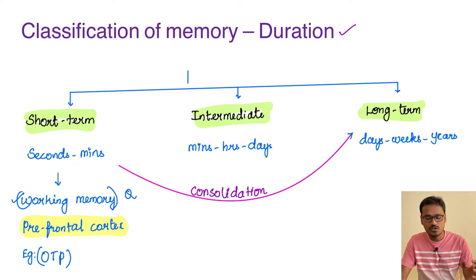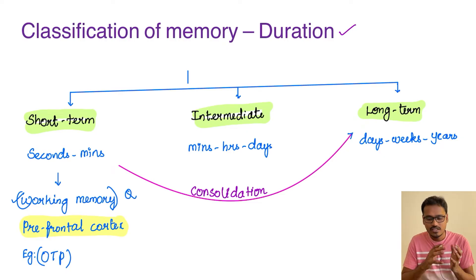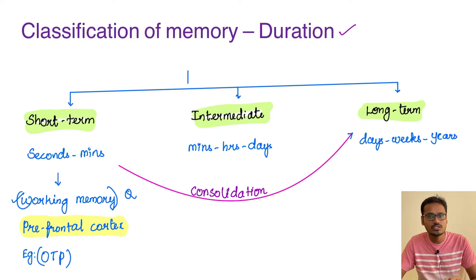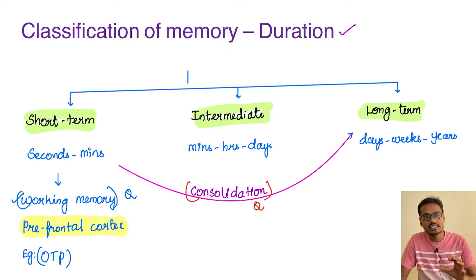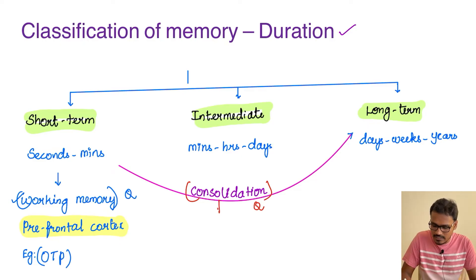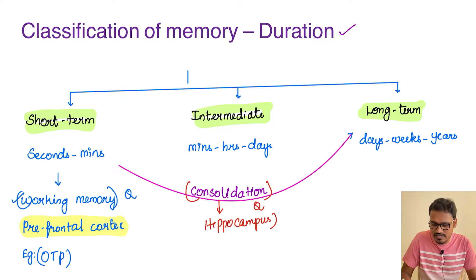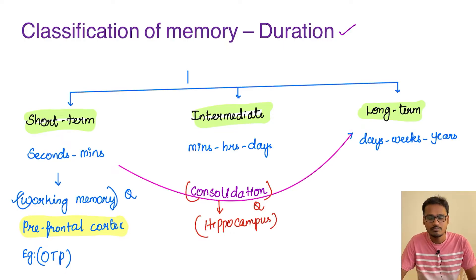Now coming to the process of consolidation. Whenever short-term memory or intermediate memory is consolidated into long-term memory — stored into long-term memory — it is called consolidation. There is one important region in the brain involved in this consolidation, and that is the hippocampus. The hippocampus is very essential for this consolidation process.